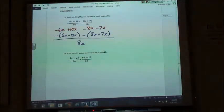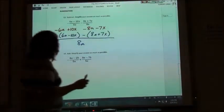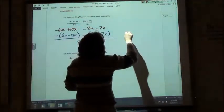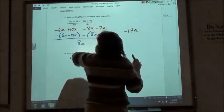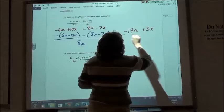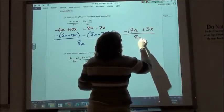Then I'm going to combine my like terms. Negative 6a minus 8a would be negative 14a. Positive 10x minus 7x is a positive 3x, all over my 8a.